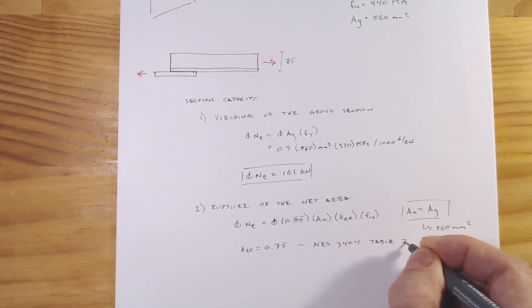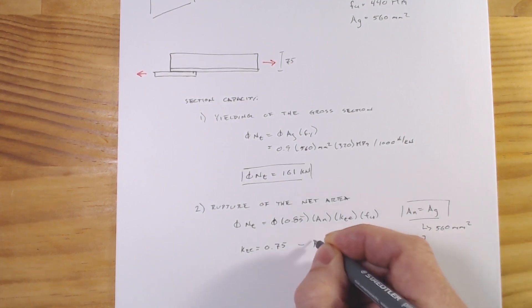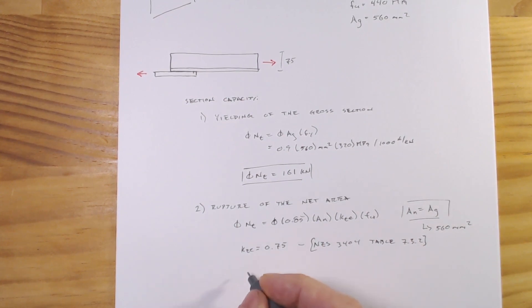Let's just plug all of this into our equation and we will get φNzt equals 0.9 times 0.85 times 560 millimeters squared times 0.75 for kte and times 440 megapascals.